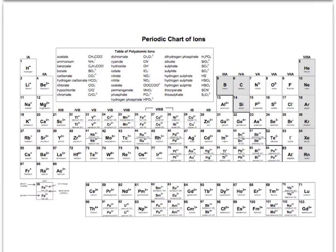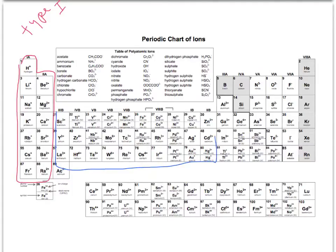We'll start with the periodic chart of the ions. Since the naming depends on where the ions come from, let's delineate a few categories. The red region is Type 1 — these are called representative elements. The blue region is Type 2, or metal ions — these are the transition metals.